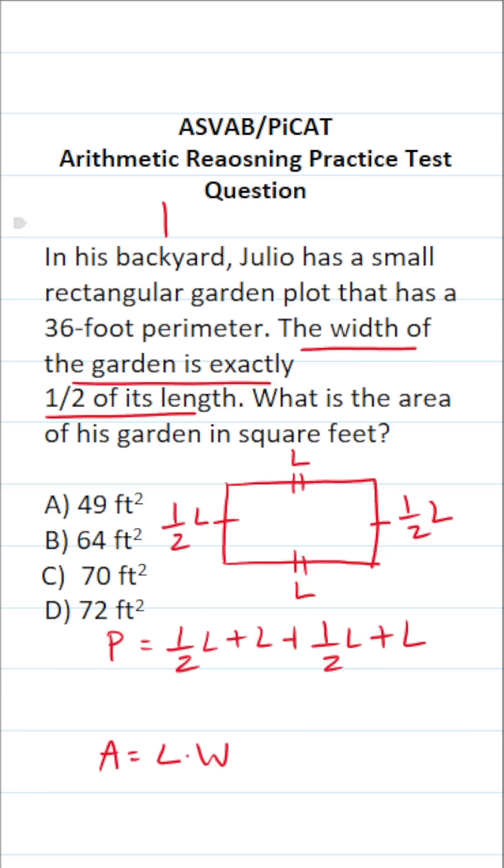What's more, we know that our perimeter of this garden is 36 feet. So this becomes 36 equals... Let's do this part mentally. L and L is going to be 2L. One-half L and one-half L is just 1L. So 2L plus 1L is going to be 3L.